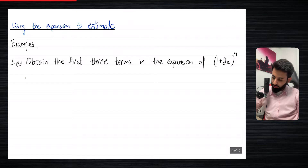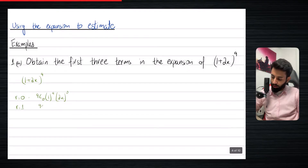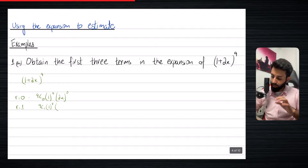So this is something that we have been doing for quite a while now, so I'm sure this is not something you're going to struggle with. So one plus two x, the whole thing to the power nine. So we start with r equals to zero. So that means nine C zero, one to the power nine and two x to the power zero. And in the last video, I want you to observe what happens to the power of x.